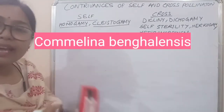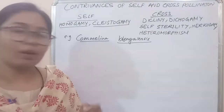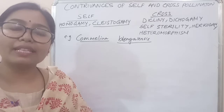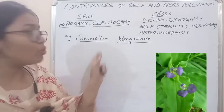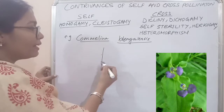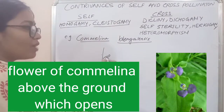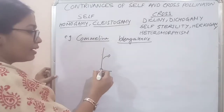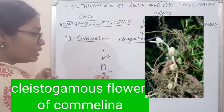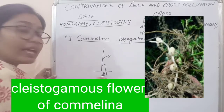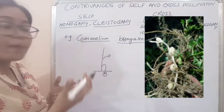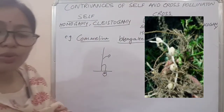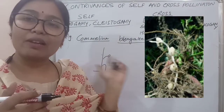This plant has two types of flowers: one type which opens, and another type which never comes out of the ground. The Commelina flower has flowers which open in the air, and some flowers go deep down into the ground and never open. These are the cleistogamy flowers, and they favor self-pollination.